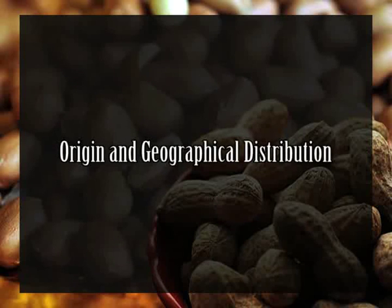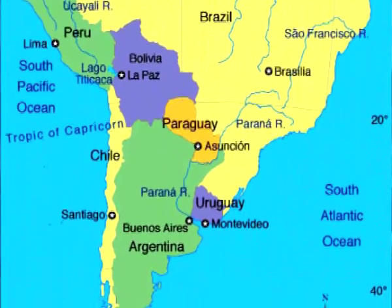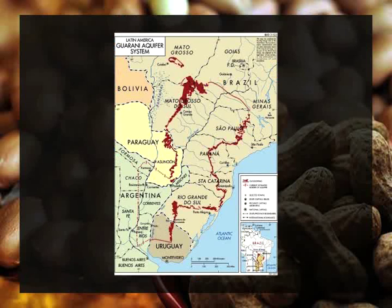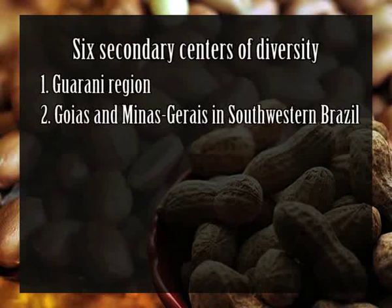The center of origin of cultivated groundnut has been discussed many times but is still not fully clear. It is believed to have originated in South America, particularly Bolivia, Peru, Brazil, and northwestern Argentina. Brazil is generally recognized as the major center of diversification of the genus. However, Krapovickas believed that Arachis hypogaea probably originated in Bolivia and northwest Argentina on the eastern slopes of the Andes Mountains. In addition, six secondary centers of diversity are recognized, including the Guaraní region, Goiás and Minas Gerais in southwestern Brazil, Rondônia and northeastern Mato Grosso in western Brazil.